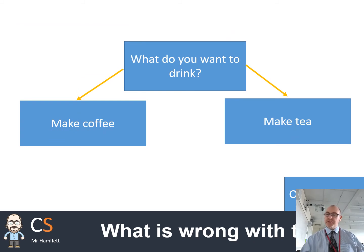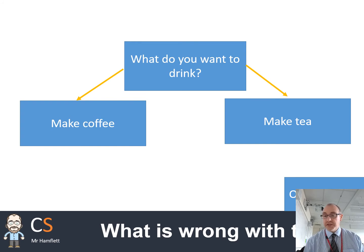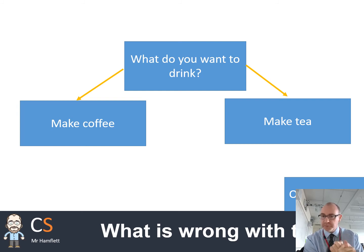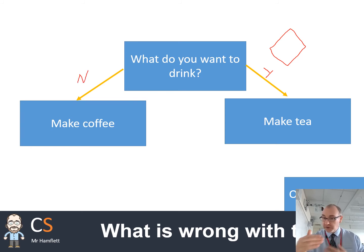So what's wrong with this one? Pause and have a think. Well, there are actually quite a few things wrong. First of all, I've got a question: 'What do you want to drink? Make coffee, make tea.' That question is not a yes/no question — so that's wrong. Second, it's using the wrong shape — the shape should be the diamond. And finally, there should be annotations on the lines, like yes/no, to make it nice and clear which way we can go. So this is completely wrong.